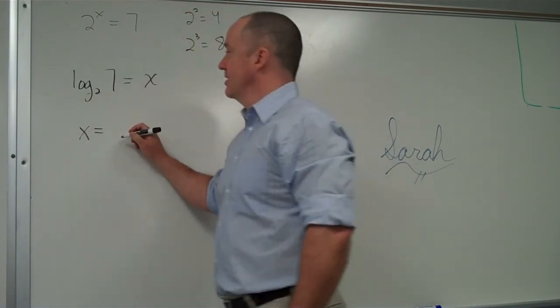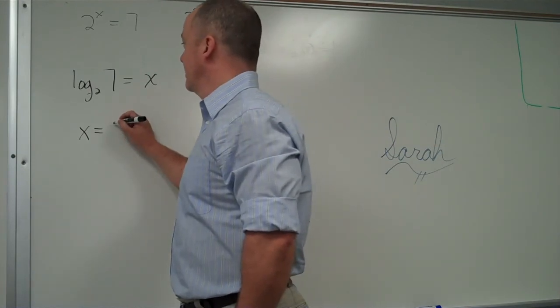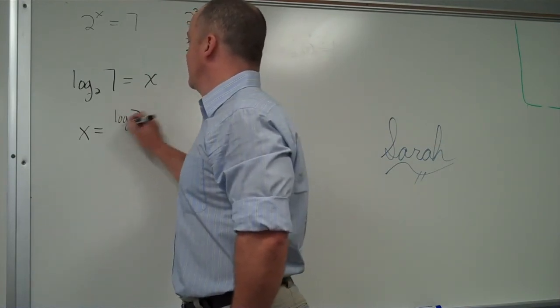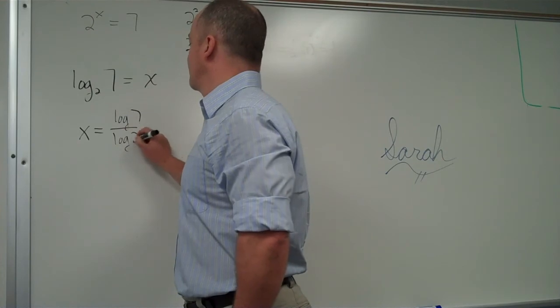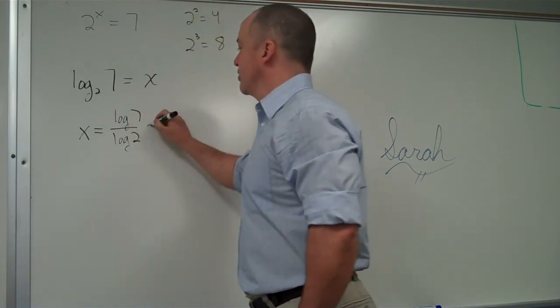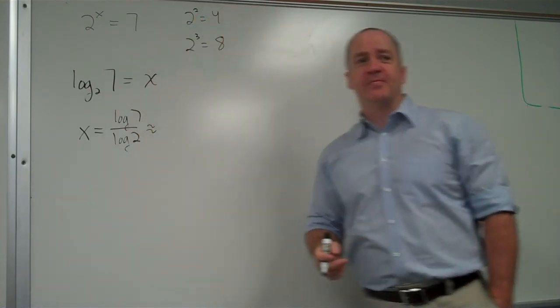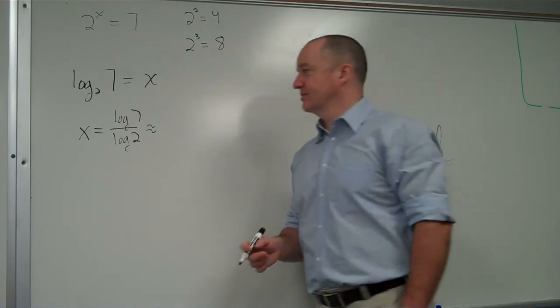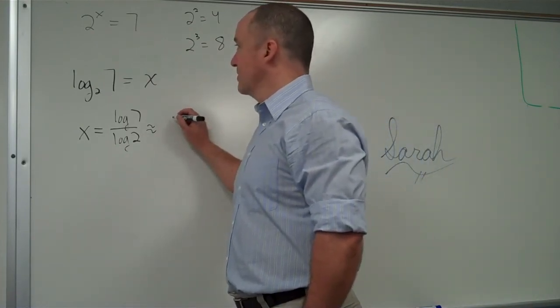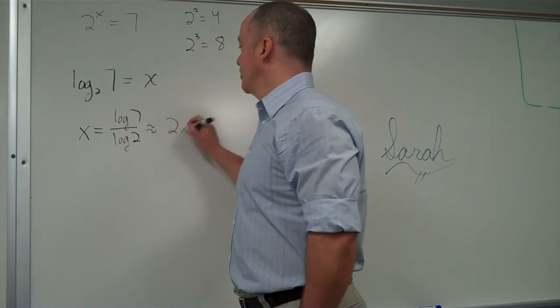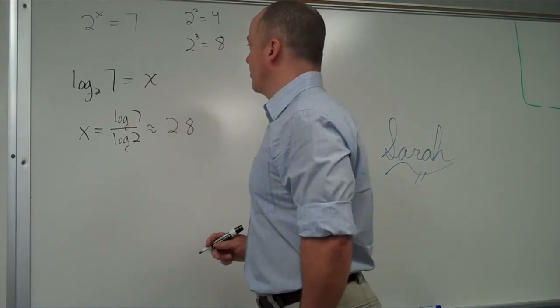What does the change of base rule say to do here? So log 7 over log 2. Log 7 over log 2. So that's my answer. Who's got a calculator? 2 point 8. 2 point 8. That sounds about right.